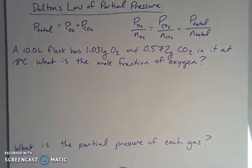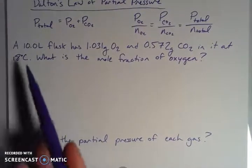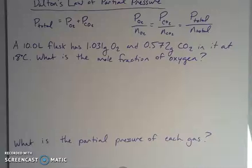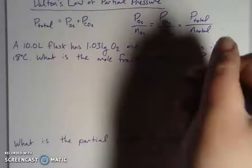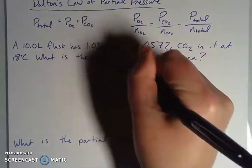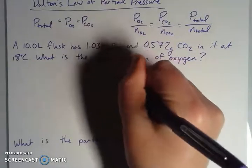We can use this to solve problems that look like this one. So I have a 10 liter flask. For visualizing what that looks like, picture five two liter bottles. So a 10 liter flask, pretty big, has 1.031 grams of oxygen and 0.572 grams of CO2 in it. And we're at 18 degrees Celsius, so kind of a chilly room temperature or slightly below room temperature. And it wants to know the mole fraction of oxygen.